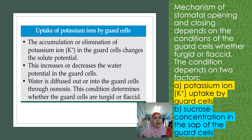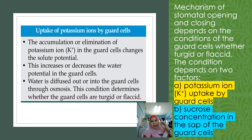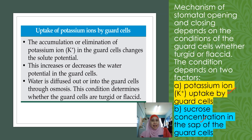The mechanism of stoma opening and closing depends on the condition of the guard cell, whether the guard cell is turgid or flaccid. This depends on two conditions: first, the potassium ion uptake by the guard cell; and second, the sucrose concentration in the sap of the guard cell.